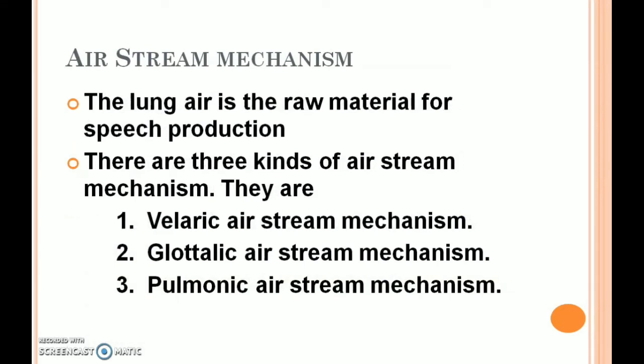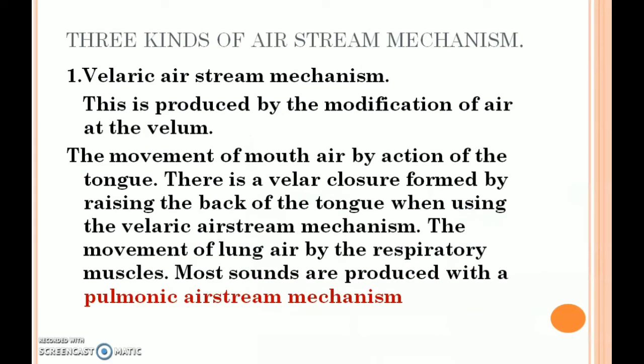There are three kinds of airstream mechanism: the first is the velaric airstream mechanism, the second is the glottalic airstream mechanism, and the third is the pulmonic airstream mechanism. The velaric airstream mechanism is produced by the modification of air at the velum. The movement of mouth air is by the action of the tongue. A velaric closure is formed by raising the back of the tongue. More sounds are produced with the pulmonic airstream mechanism, not with the velaric airstream mechanism.